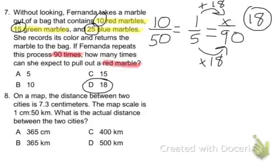Moving on to number 8. On a map, the distance between two cities is 7.3 centimeters. The map scale is 1 centimeter to 50 kilometers. What is the actual distance between the two cities?